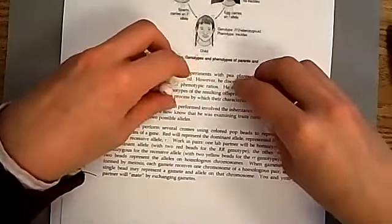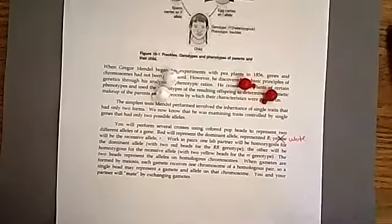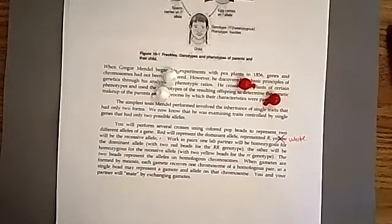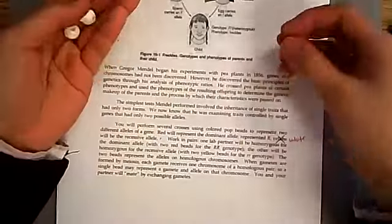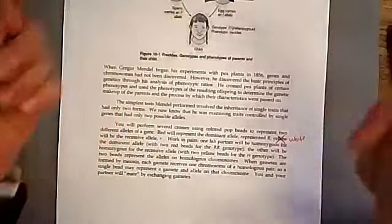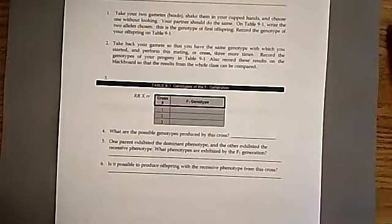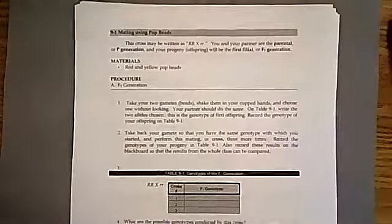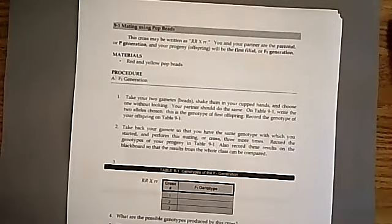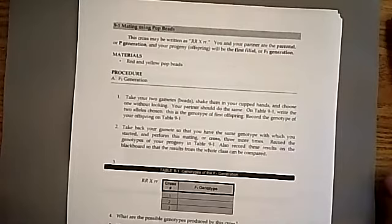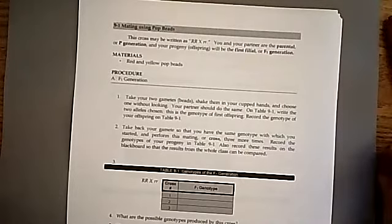The two beads represent the alleles on homologous chromosomes — one from the mother, one from the father. When gametes are formed by meiosis, each gamete receives one chromosome of a homologous pair, so a single bead represents a gamete and its allele. One lab partner will be homozygous dominant — capital R capital R, two red beads — and the other will be homozygous recessive — lowercase r lowercase r, two white beads. We mate by exchanging gametes, or one bead at a time, by random chance. This cross is written as capital R capital R × lowercase r lowercase r. The parents are the P generation and their offspring will be the F1 generation.